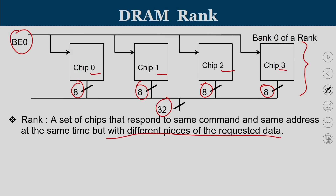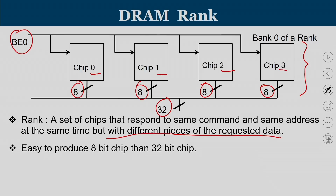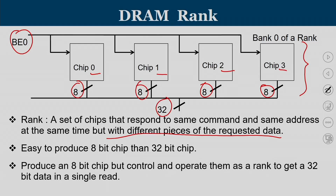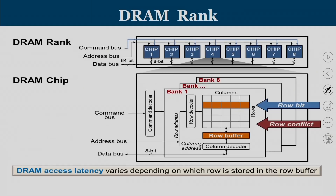The peculiarity of this chip organization is that each chip gives a different piece of data for the given address. It is easier to produce an 8-bit chip rather than a 32-bit chip — each chip generates only 8 bits — and the organization ensures that together you get the full 32-bit data. Produce an 8-bit chip but control and operate them as a rank together to get 32-bit data in a single read.